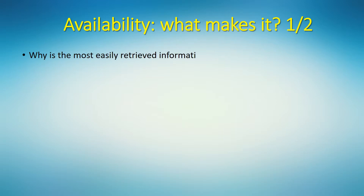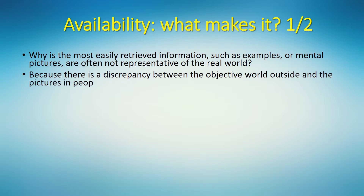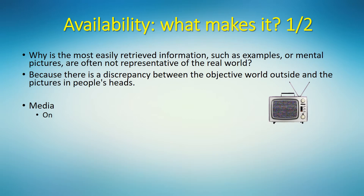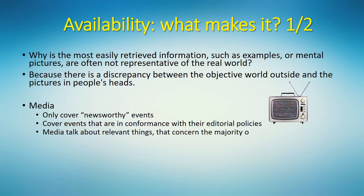We have already clarified the psychological mechanism behind this bias — availability bias is due to the mental ease of retrieval. But why is the most easily retrieved information, such as examples or mental pictures, often not representative of the real world? Because there is always a discrepancy between the objective world outside and the pictures in people's heads. Think about how media influence the picture in your head. Media only cover newsworthy events. Local news might cover a case of someone who jumped off a building, but not a case of an old person who fell off a bed and died. Besides, media cover events in conformance with their editorial policies, such as political views, and talk about things relevant to the majority of their audience, not the minority.